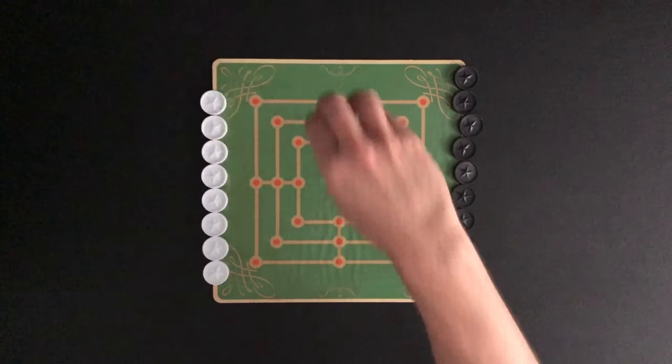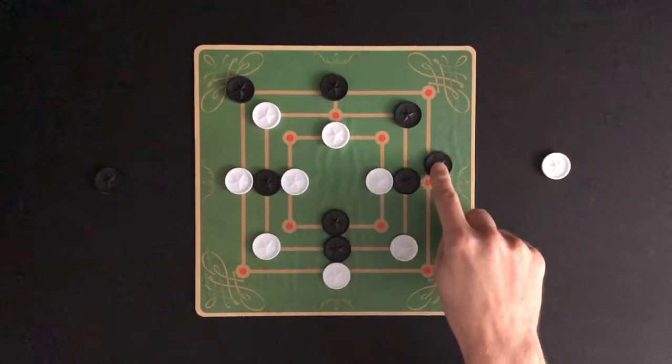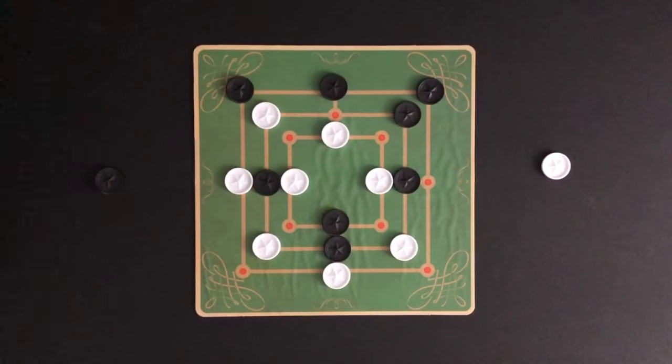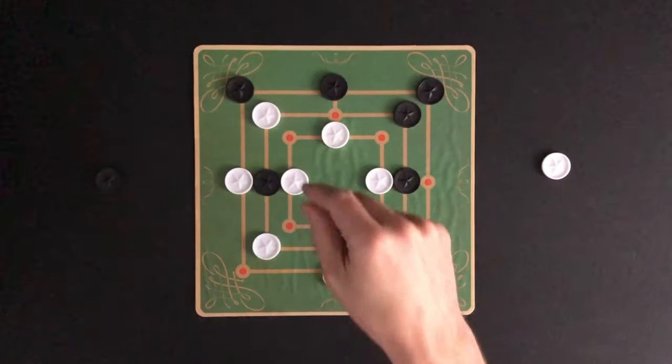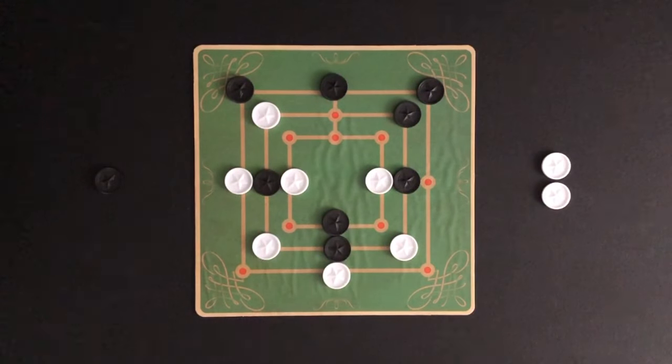White will start by placing one of their markers. The object of the game is to capture your opponent's markers. When a player gets three of their markers in a horizontal or vertical row, they get to capture one of their opponent's markers. Any marker can be removed as long as it is not in a row of three. A captured marker is removed from the board and is out of play.